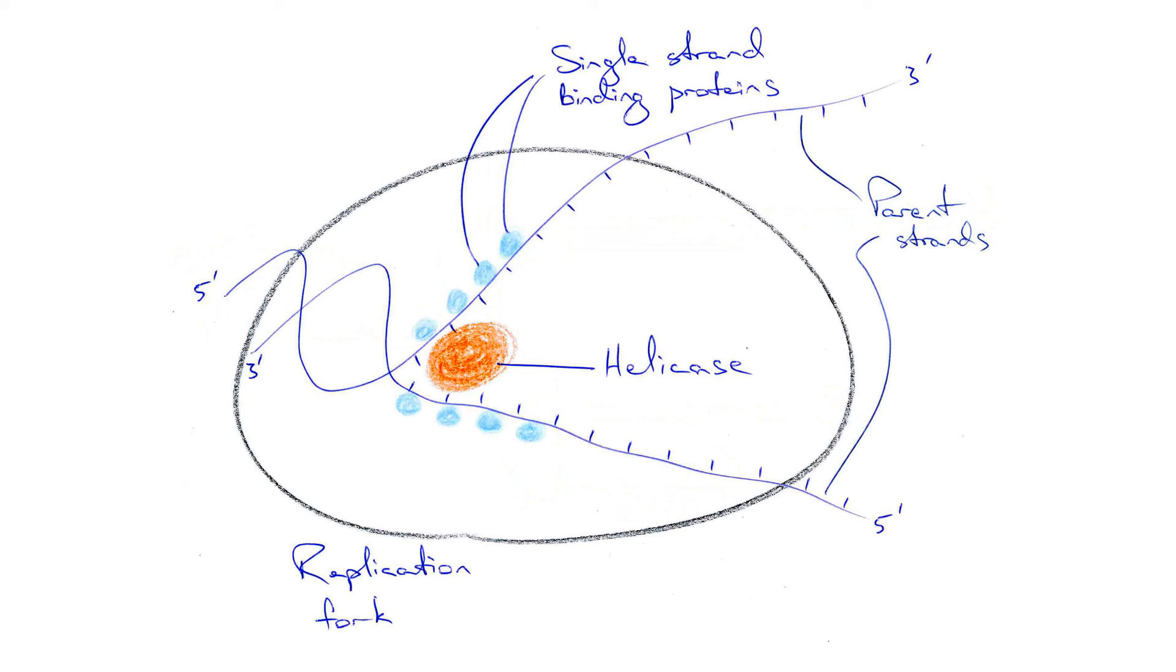They're called the template strands or parent strands. The region of double-stranded DNA becoming two single strands is called the replication fork. Single strand binding proteins temporarily attach to each single strand to stabilize the opened up parental strands.